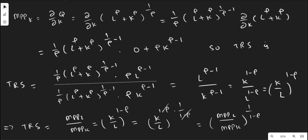The technical rate of substitution is found by dividing the marginal physical productivity of labor by the marginal physical productivity of capital. Several terms cancel out, and rho cancels with rho, leaving us with L to the power (rho minus 1) divided by capital to the power (rho minus 1).